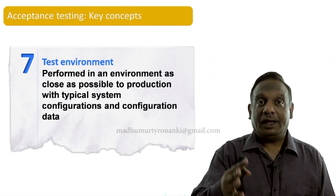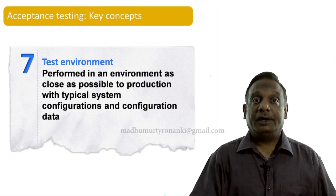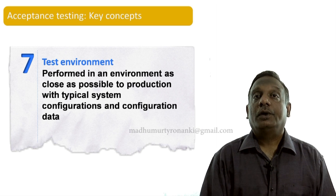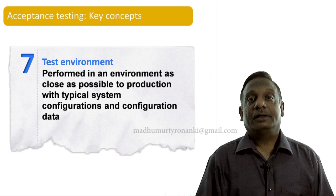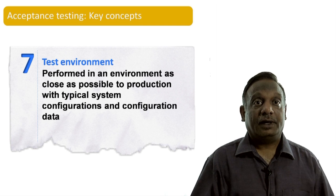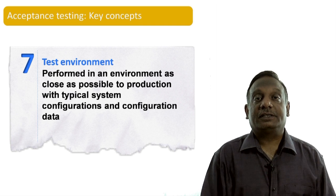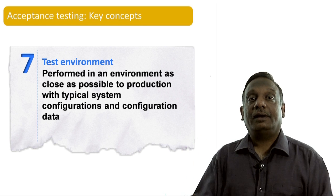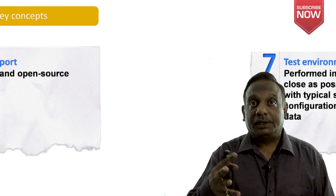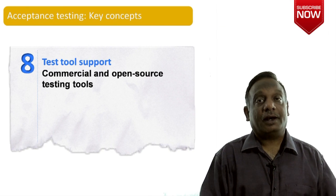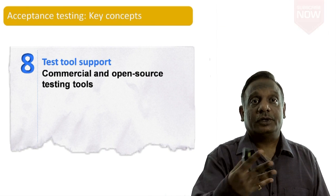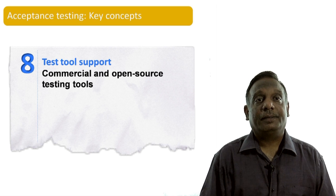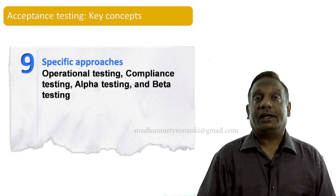Like system testing, acceptance testing is performed in an environment as close as possible to production, with typical system configurations and configuration data. It is still done in a test environment, not in the real production environment. For tooling, we use commercial and open source testing tools such as QTP and Selenium.